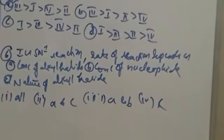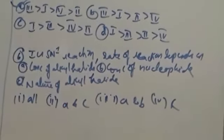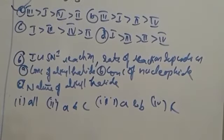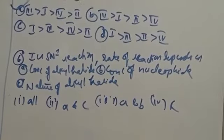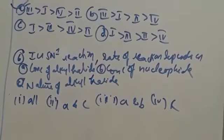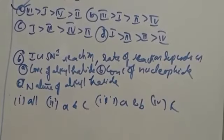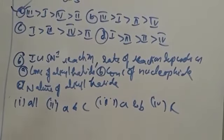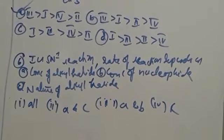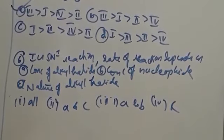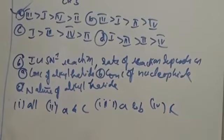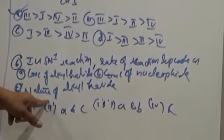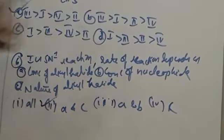In SN1 reaction, the rate of reaction depends upon: concentration of alkyl halide, concentration of nucleophile, and nature of alkyl halide. SN1 rate depends upon the nature and concentration of the alkyl halide; it does not depend upon the concentration of the nucleophile — that is why it is a unimolecular reaction. So A and C both are correct.